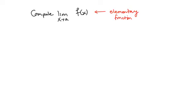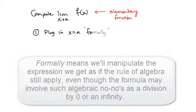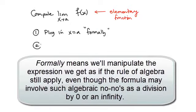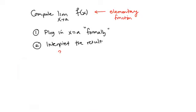The basic process we've used since Calc 1 was a multi-step process. The first step was to plug in x equals a formally. The second step was to interpret that result. Often we would get things like 3 over 7, which we knew was a number. If we got a real number, we called that the limit. Other times we would get things like 0 over 0 or infinity over infinity, which were formulas we called indeterminate.